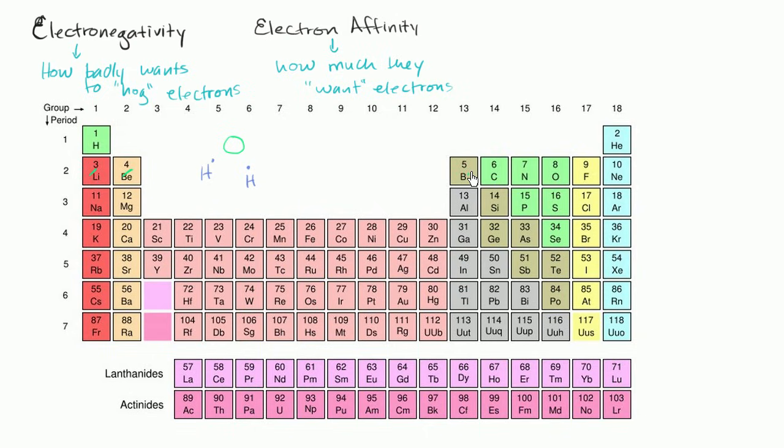And the oxygen has, we see here in its outermost shell, it has one, two, three, four, five, six valence electrons.